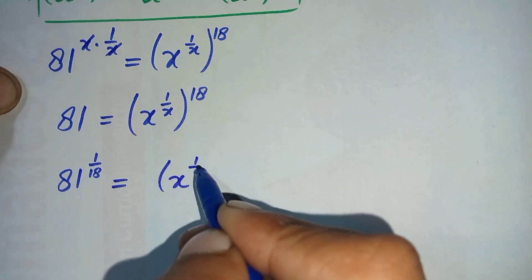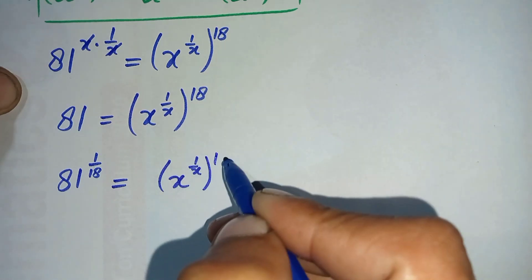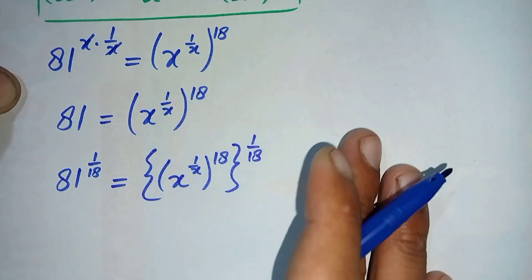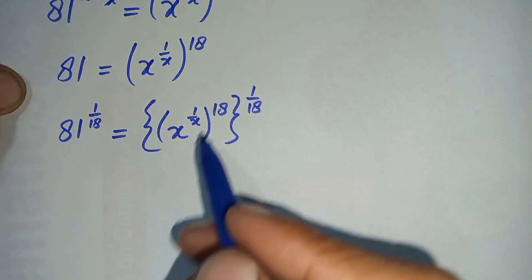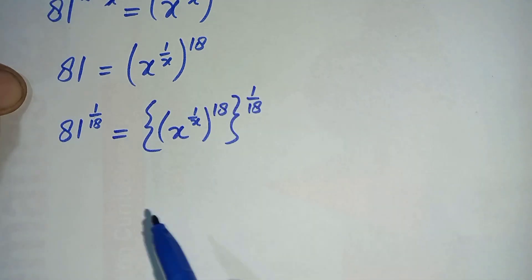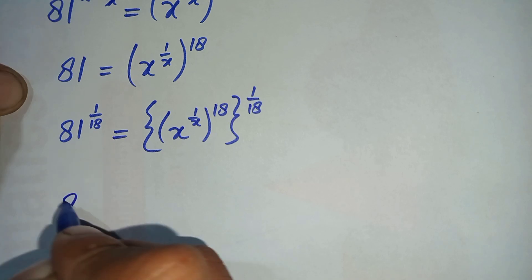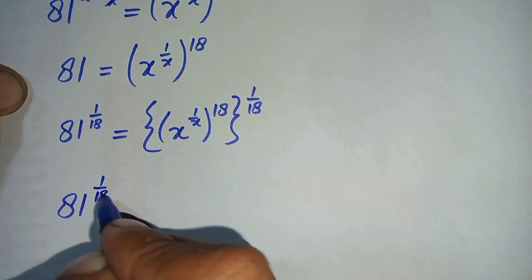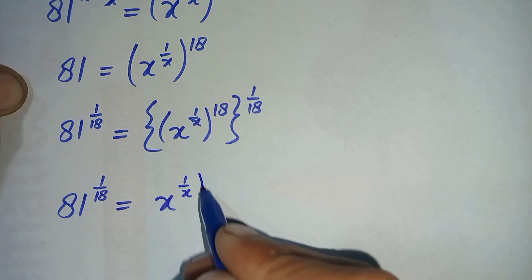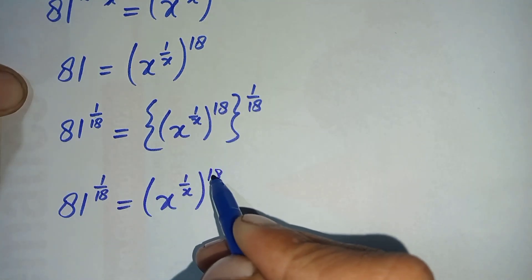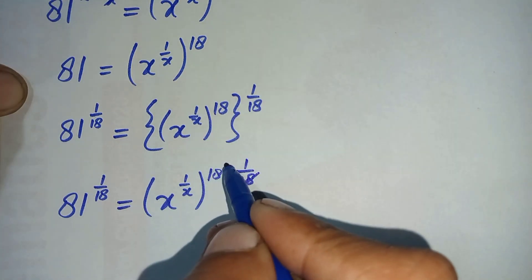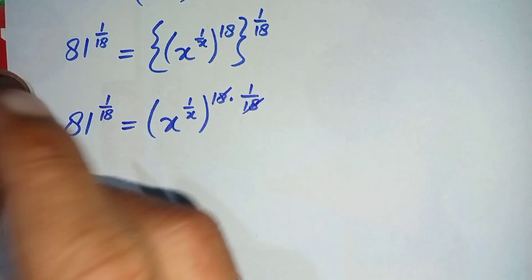On the right hand side, we will use the above exponential math property and multiply the two powers with each other. So this equation will become 81 raised to power 1 over 18 is equal to x raised to power 1 over x, whole raised to power 18 times 1 over 18. Here, 18 and 18 cancel with each other.